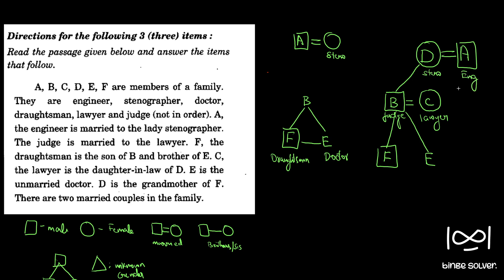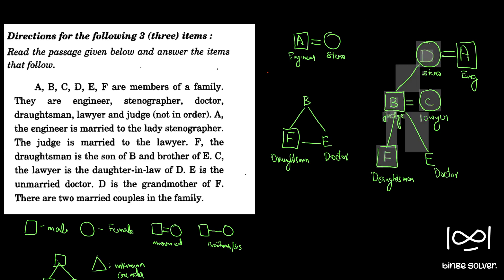A was engineer. A, the engineer is married, so we filled in that information also. We have filled in all the information. This is draughtsman. This is the family tree we need. We can use this family tree to solve all the questions.